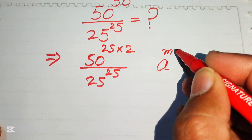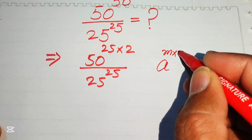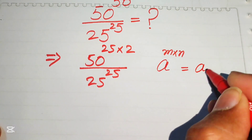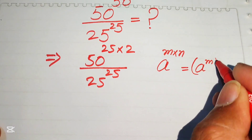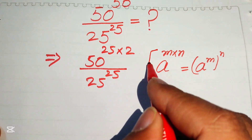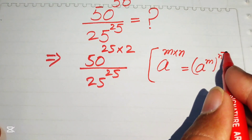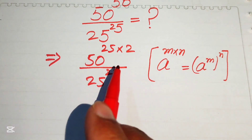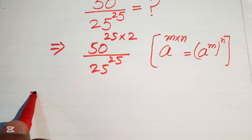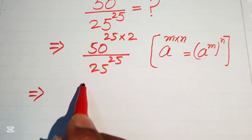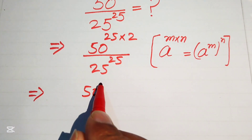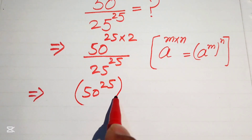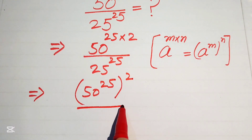Now we need an exponent law. We know that if we have a to the power of m multiplied by n, we write it as (a to the power of m) to the power of n. Applying this law, we write the term as (50 to the power of 25) squared, divided by 25 to the power of 25.